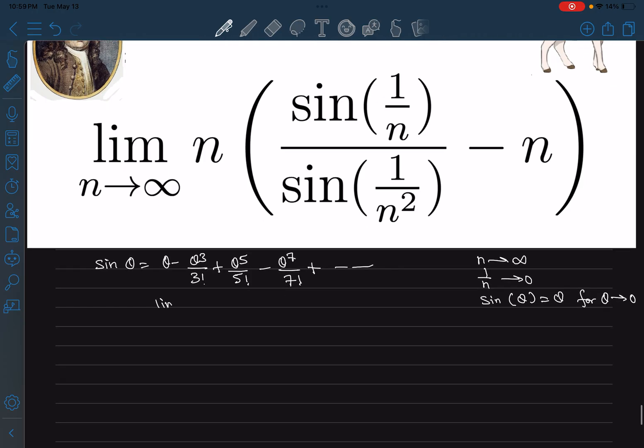If we use the Taylor series, our limit can be written as n times, that will just be 1 by n minus 1 by 6 times n cube plus in the order of 1 by n to the power 5, divided by, that will be 1 by n square minus 1 by 6 n to the power 6 plus in the order of 1 by n to the power 10th, and then minus n.